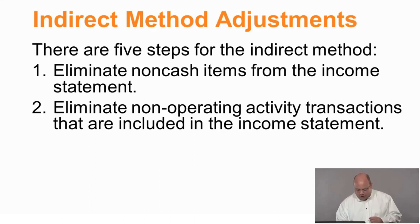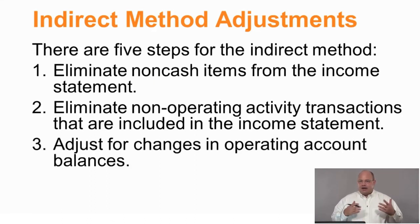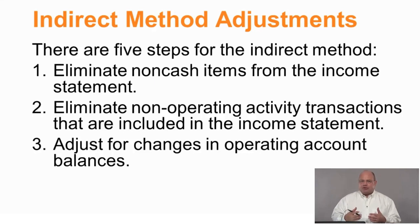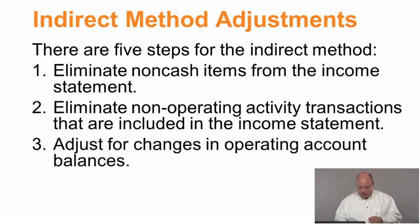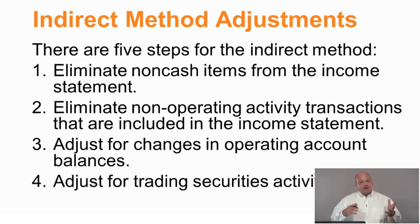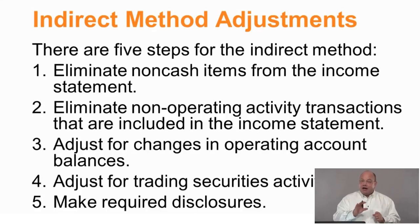We need to adjust for that. We then need to adjust for changes in operating account balances, and this is where we're going to spend the most time — looking at adjustments for credit sales made at the end of December that we didn't collect this year, and collections made in January for sales from the previous year. We also potentially need to adjust for trading security activities, and there are a couple of specific disclosures required under the indirect method.